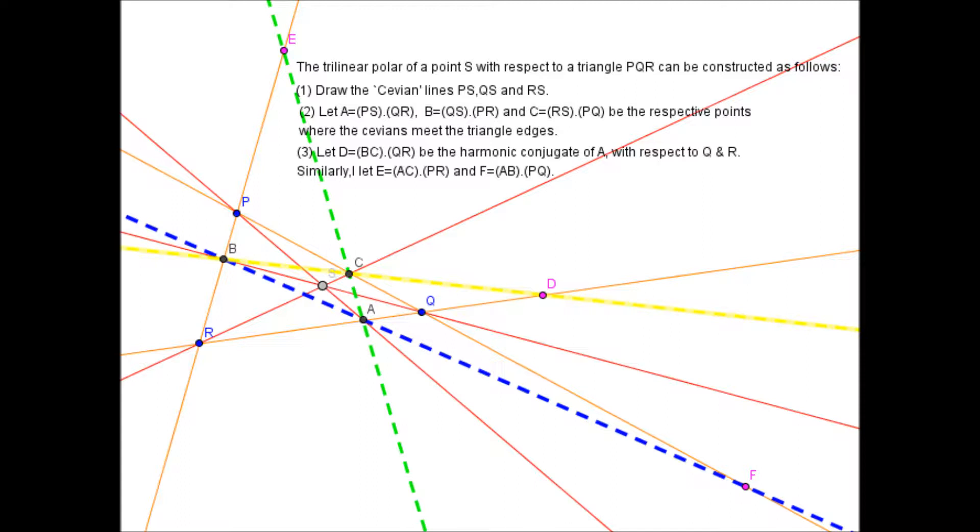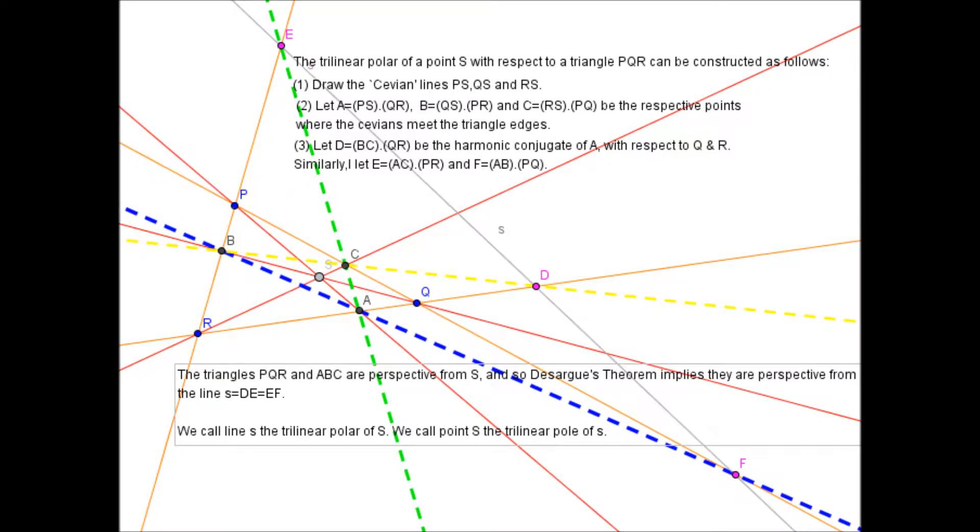And in a totally analogous way, we can find the harmonic conjugate E of B with respect to P and R. And we can find the harmonic conjugate F of C with respect to P and Q. So basically, by drawing in these extra three lines, which I've shown in blue, green and yellow, we find these extra three points, one on each edge of the triangle. And now the claim is that these new three generated points, which I've drawn in purple, D, E, F, are actually going to lie on a straight line. And we have a special name for that straight line. We call it the tripolar of S, of capital S. So we often denote it as little s.